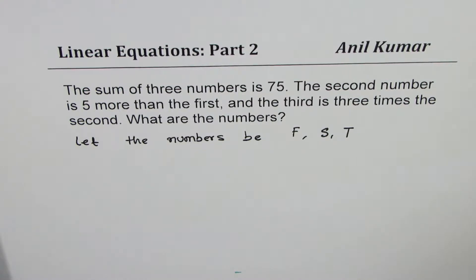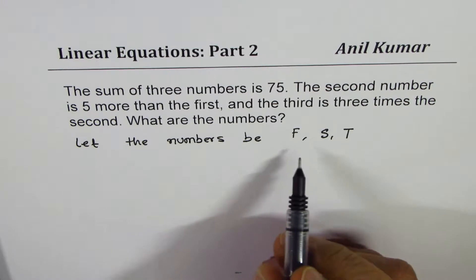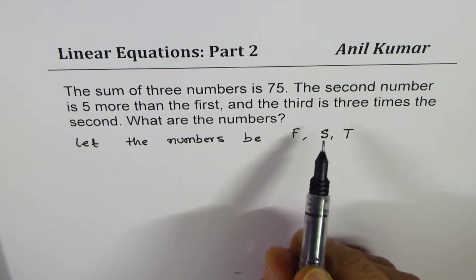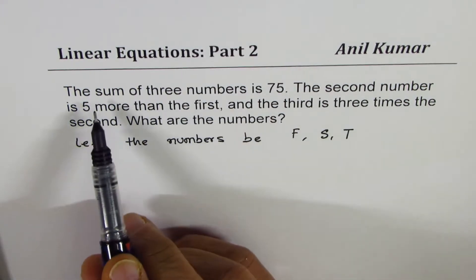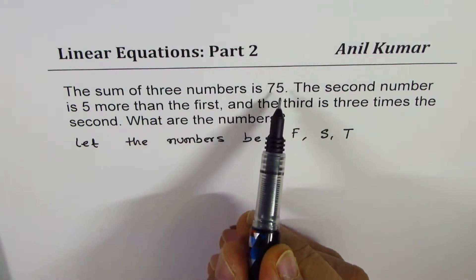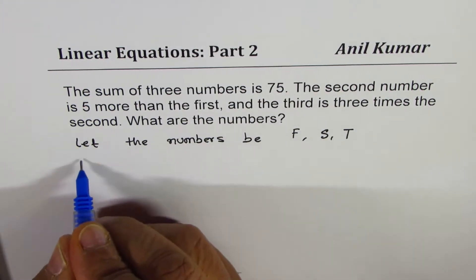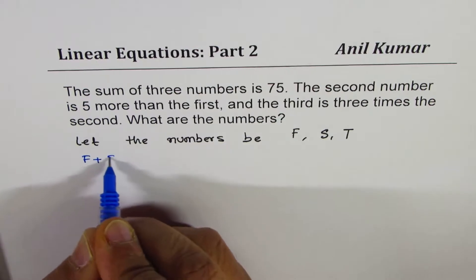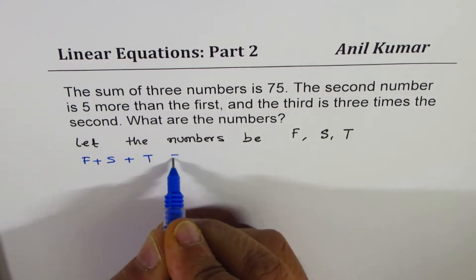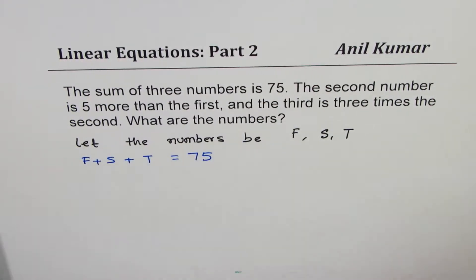Now the sum of three numbers is 75, so that gives us an equation: F + S + T = 75. From the given statement we have our first equation.